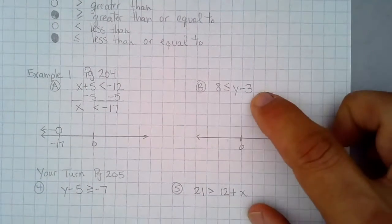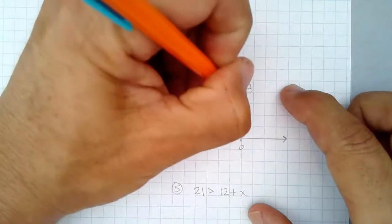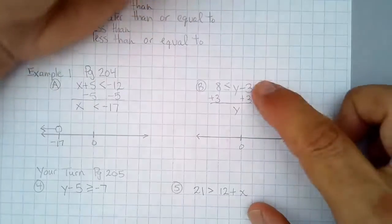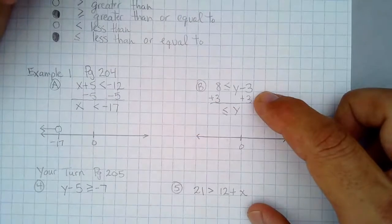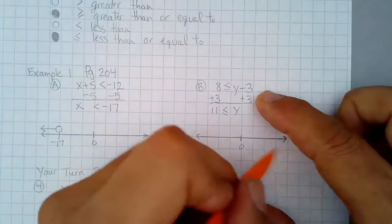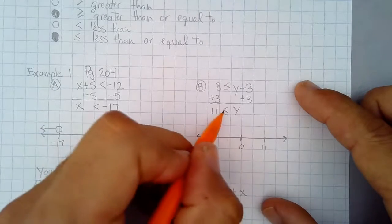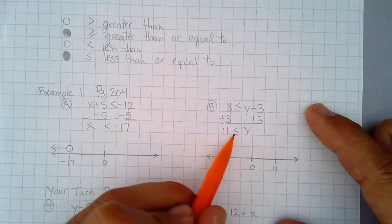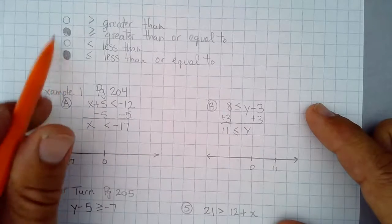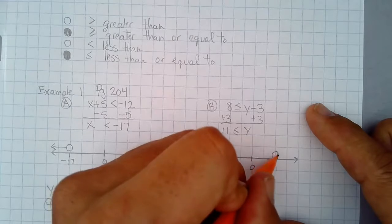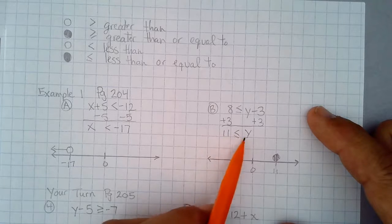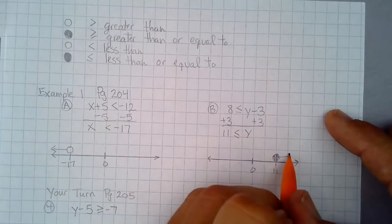For part b, again we would use the inverse operation. Instead of subtracting 3, we would add 3, and that's 0. Copy the inequality symbol, and that's 11. So 11 is over here somewhere, and it's greater than or equal to, so that would be our closed dot. I should say 11 is less than or equal to y. Closed dot, and then the numbers — maybe 12 would fit, because 12 is bigger than 11. It's opening to the bigger number.